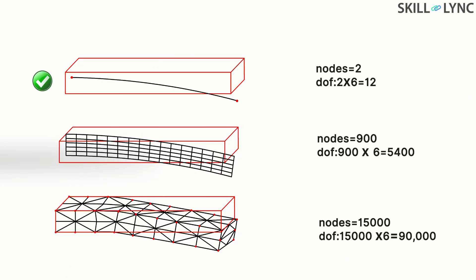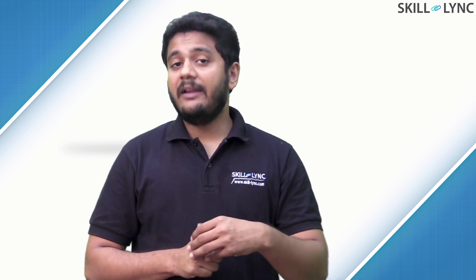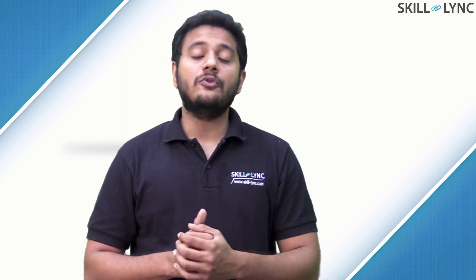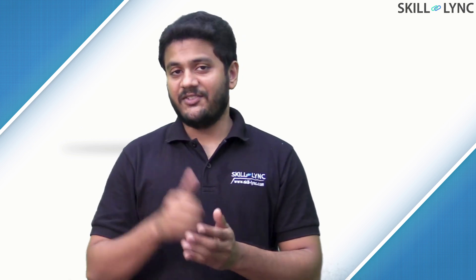Now, each node has 6 degrees of freedom. Hence, the 1D beam element has only 12 degrees of freedom to compute, which is 12 unknowns. The 2D beam element has 5,400 DOFs to compute and the 3D beam element has 90,000. To compute the degrees of freedom, take the number of nodes and multiply it by 6.